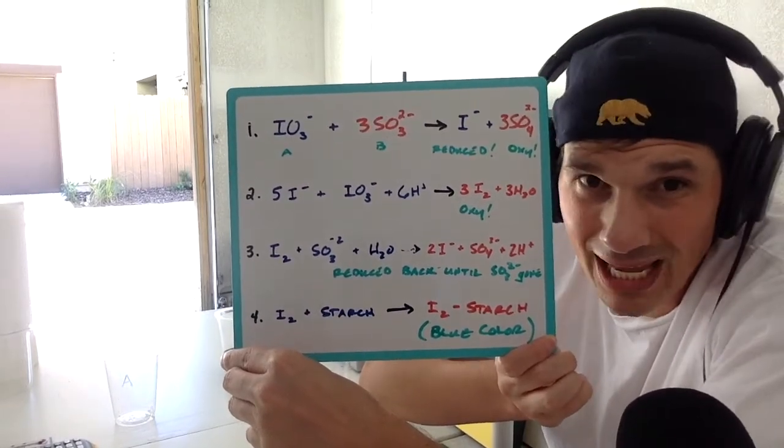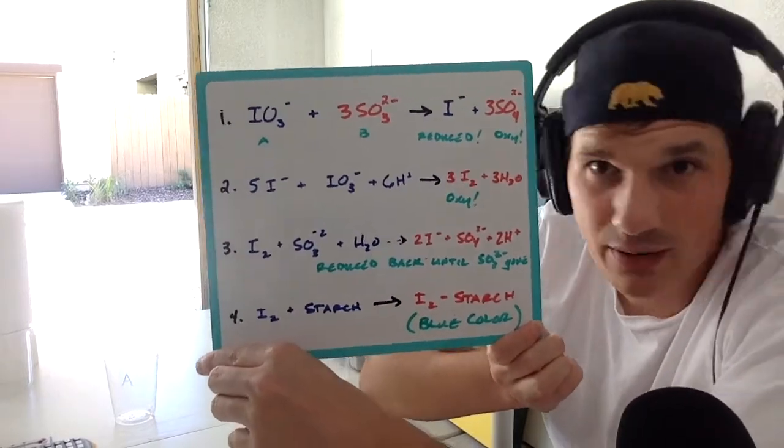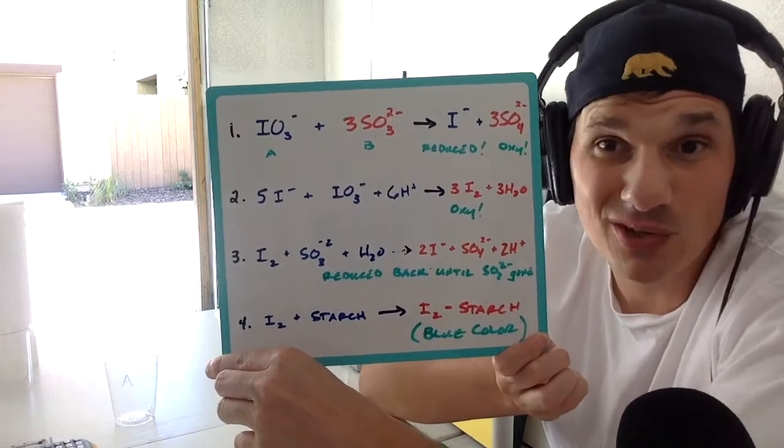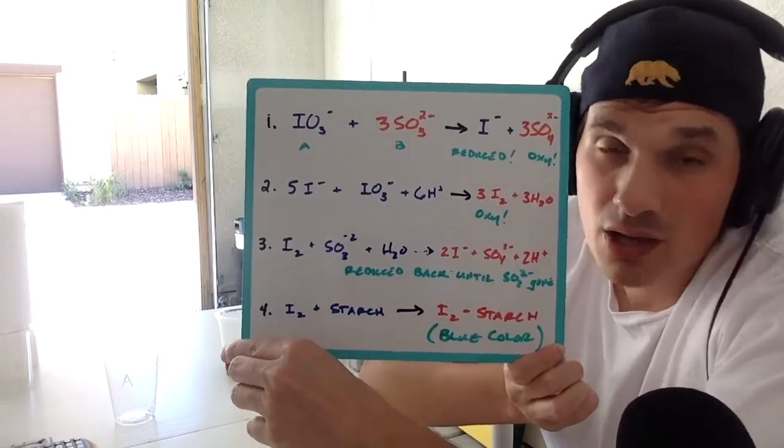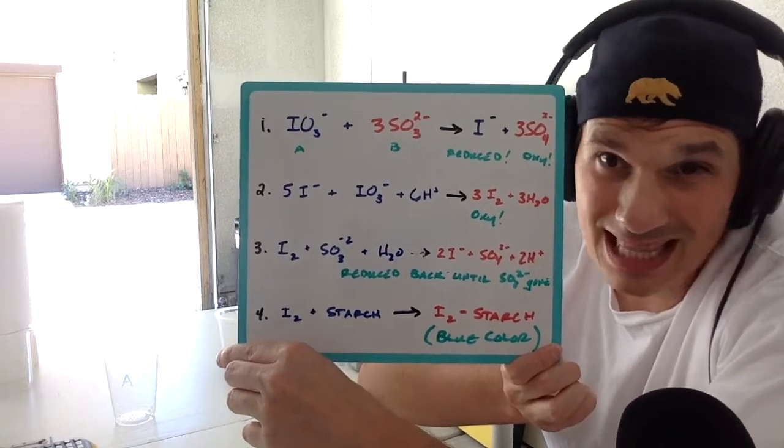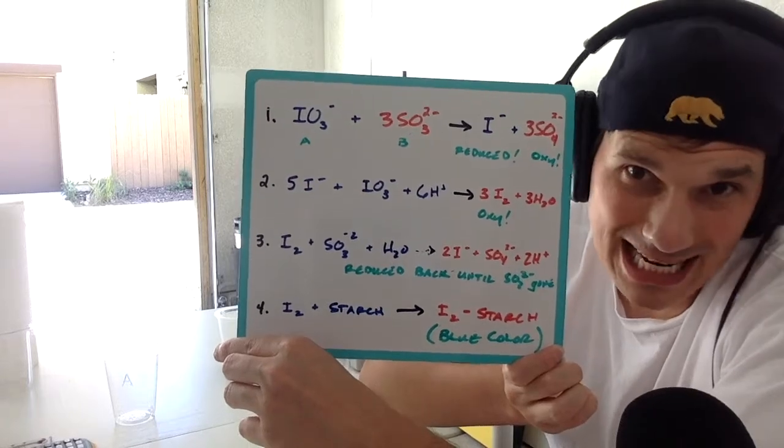Well, it's going to do that because of that sulfite that's in there. And this reaction keeps going back and forth until all that sulfite is used up. It's that limiting reactant in there. So, once all the sulfite is used up, the iodine isn't going to be reduced again. It's not going to be reduced back into iodide.